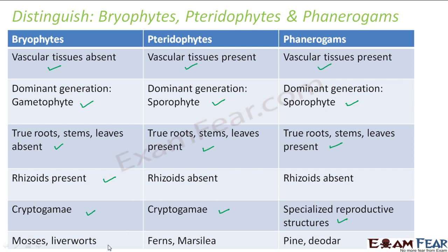Examples of bryophytes are mosses and liverworts. Examples of pteridophytes are ferns and Marsilea. Phanerogams include pine, deodar, rose, etc. This is a good distinction between bryophytes, pteridophytes, and phanerogams.